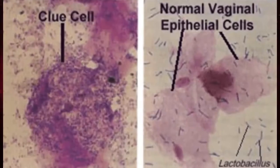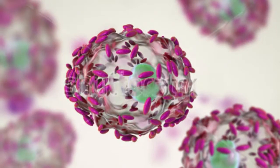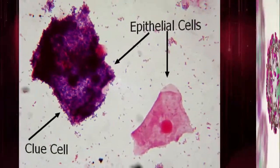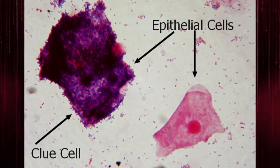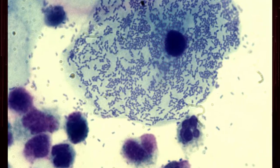But clue cells are seen as squamous epithelial cells with large numbers of cocobacillary organisms densely attached in clusters to their surfaces, giving them a granular appearance. The cytoplasm appears like shading with black pencil and the edges of the squamous epithelial cells are obscured.